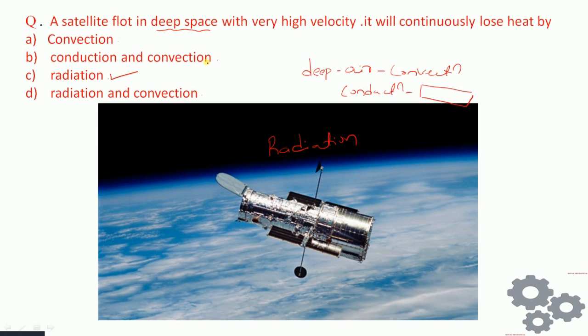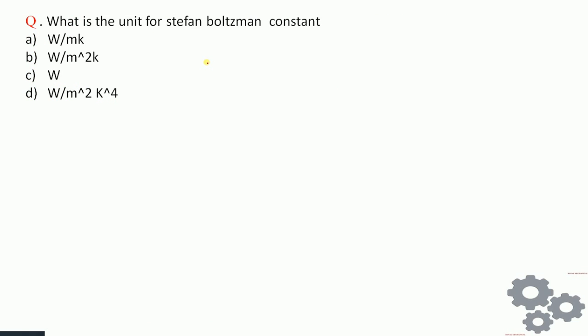Therefore radiation is the correct answer for the satellite question. Next question: what is the unit of the Stefan-Boltzmann constant? The unit for the Stefan-Boltzmann constant σ is watts per meter squared per Kelvin to the fourth power, i.e., W/m²·K⁴.